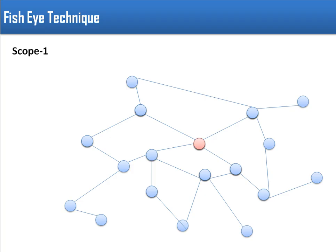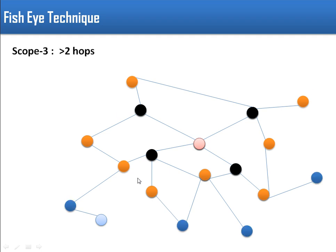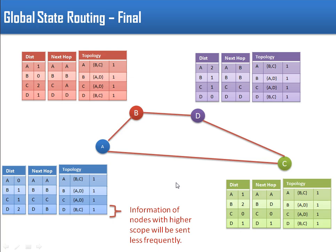This scope criteria can be changed - we are using it here for demonstration only. In scope 1, whichever node is directly connected to the center node is considered. These are the nodes in scope 1. For scope 2, all nodes having a distance of two hops from the center node are included. The remaining nodes are in scope 3. So the network is divided into scopes, and this division is used to determine how topology tables will be transmitted.